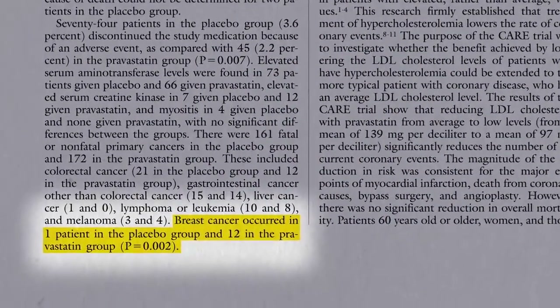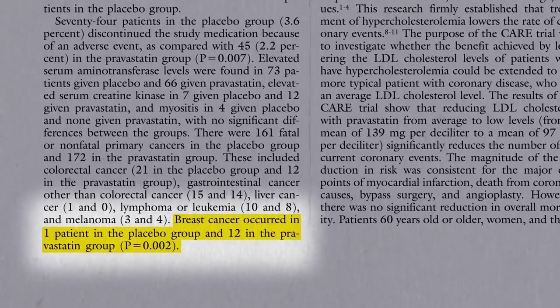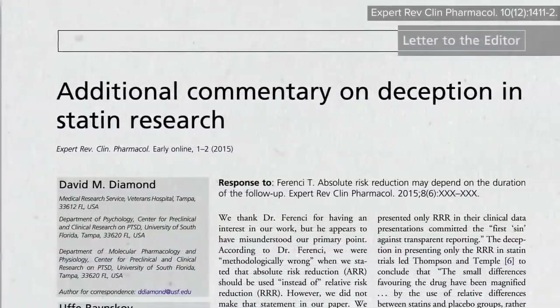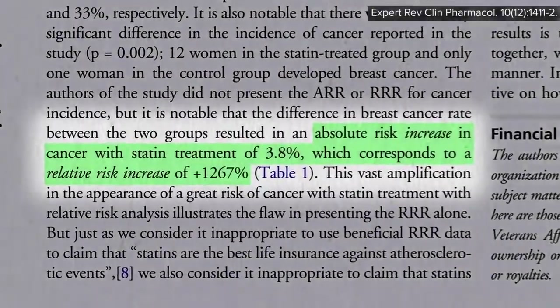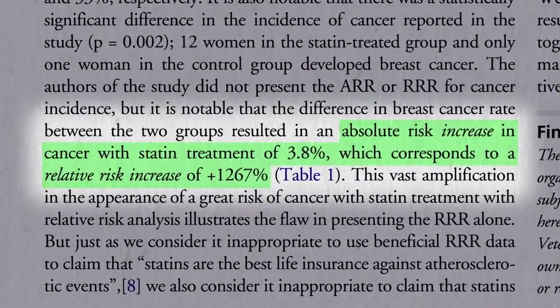Then you could flip it around for the side effects. For example, they found that 0.3% — 1 out of 290 women in the placebo group — got breast cancer over those 5 years, compared to 4.1% — 12 out of 286 in the statin group. So a pro-statin spin on this study would be like a 24% drop in heart attack risk and only 3.8% more breast cancers, whereas an anti-statin spin could be like only 3% fewer heart attacks compared to a 1,267% higher risk of breast cancer. Both portrayals are technically true, but you can see how easily you could manipulate people if you picked and chose how you were presenting the risks and benefits.